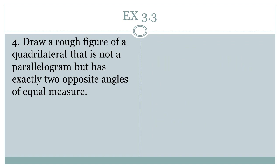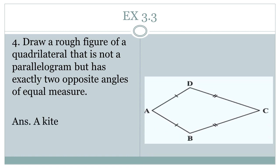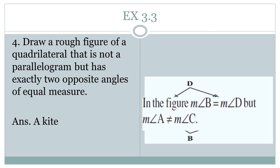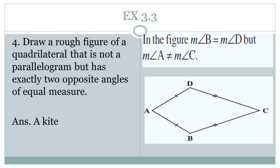Question 4: Draw a rough figure of a quadrilateral that is not a parallelogram but has exactly two opposite angles of equal measure. The answer is a kite. In a kite, AD equals AB and BC equals CD. Angles B and D are equal in measure, but angles A and C are not equal to each other.